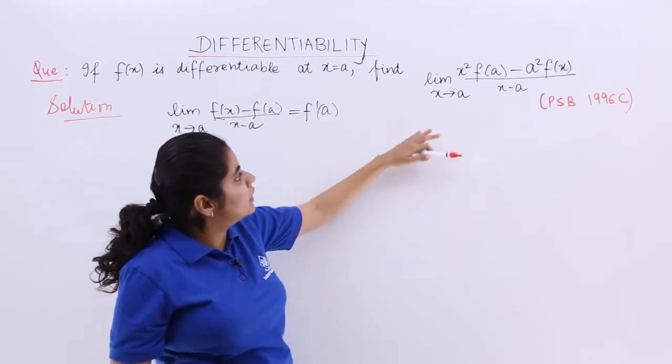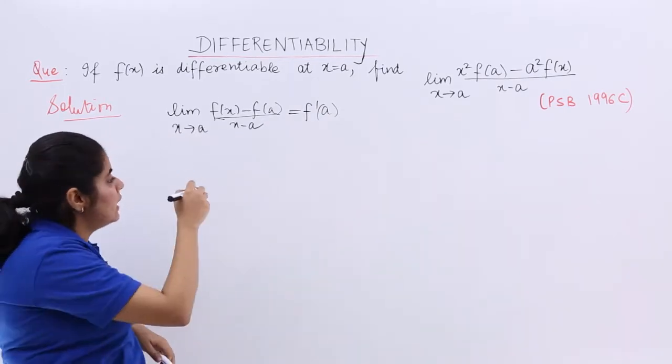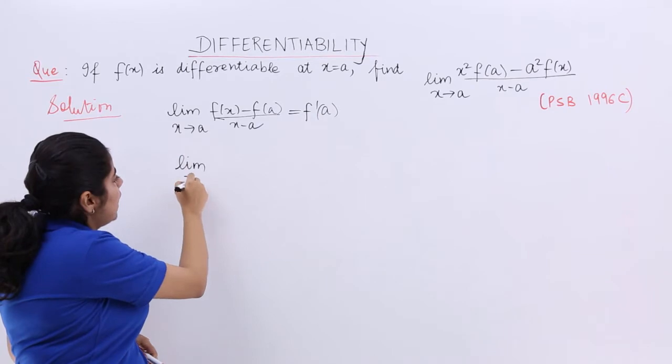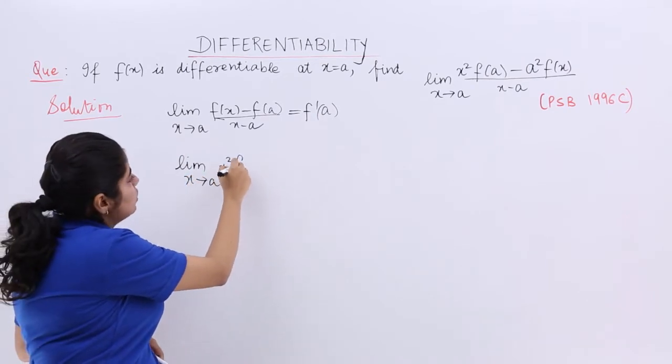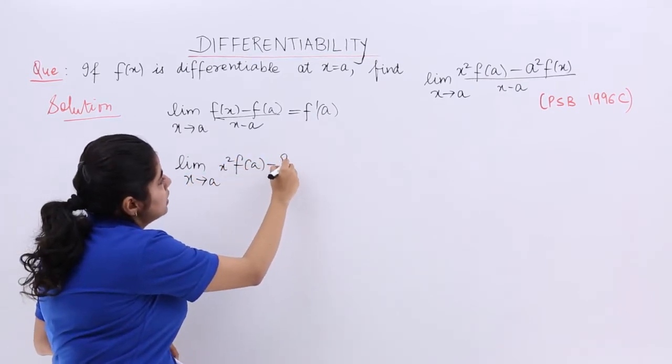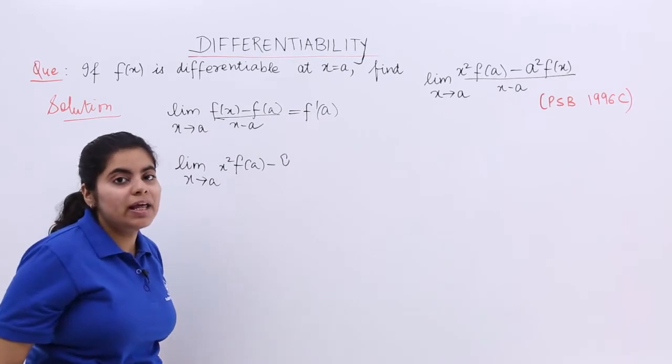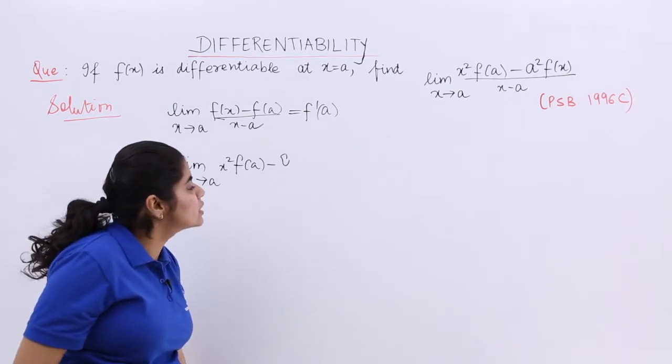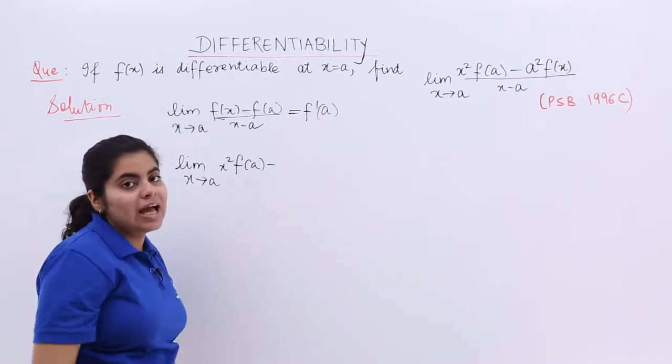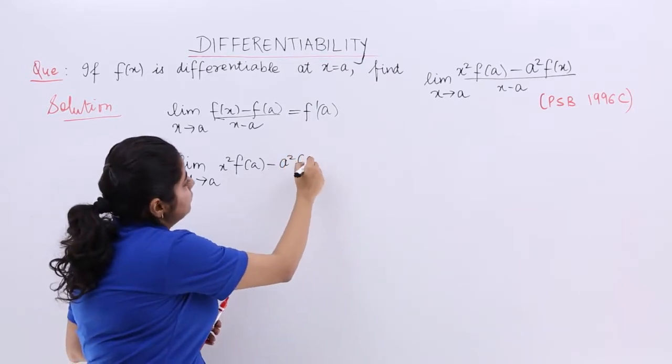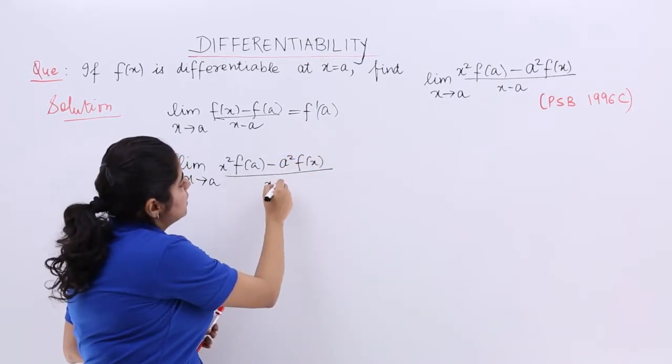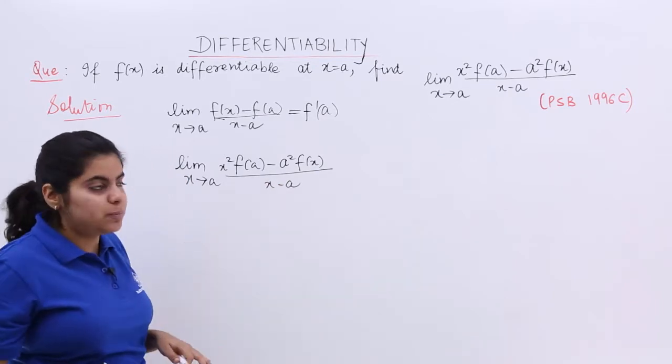Now I have been given this expression. Let's write the expression again. It says limit x tends to a of [x²f(a) - a²f(x)] upon (x - a). This is the expression.